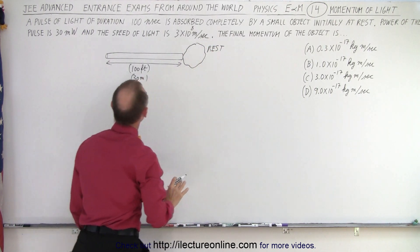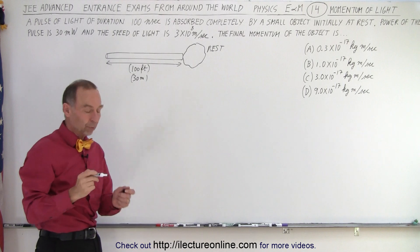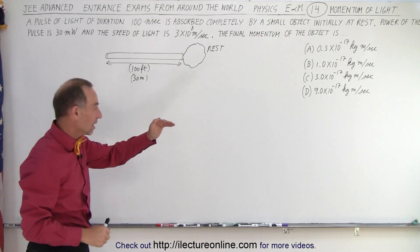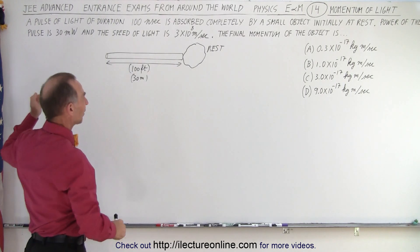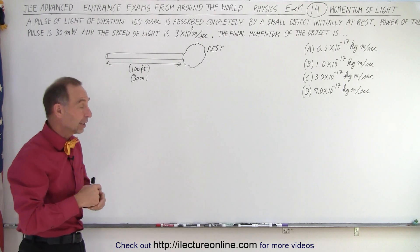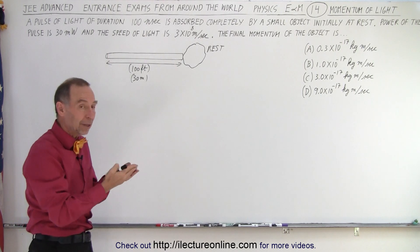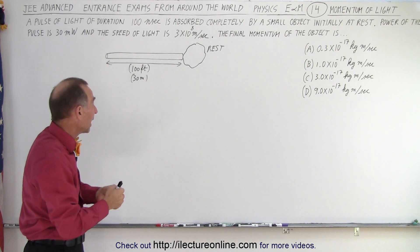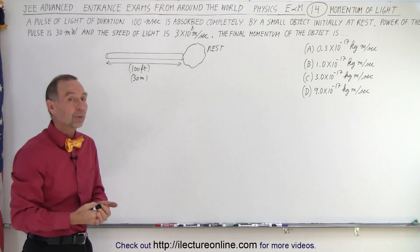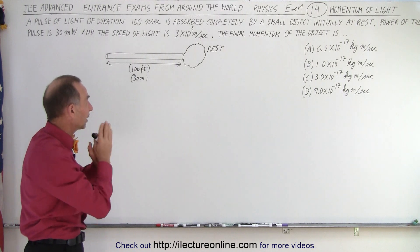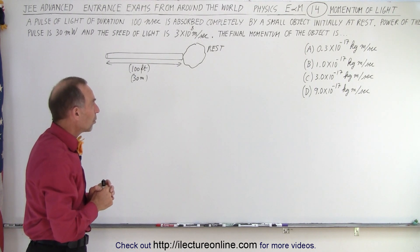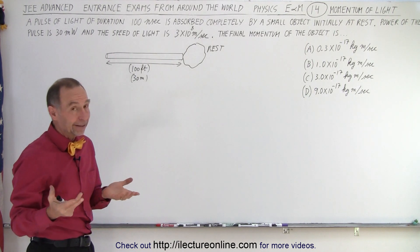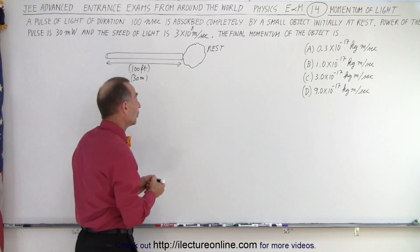Now it looks like it is completely absorbed because if the light hits the object and then reflects back off in the opposite direction, the force applied to the object would be twice as great, the pressure would be twice as great, and the momentum imparted to the object would be twice as great. But in this case it's completely absorbed. So how do we solve a problem like this? Again, the answer is you need to know this equation.